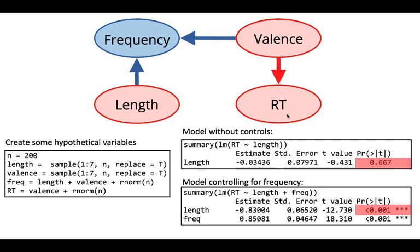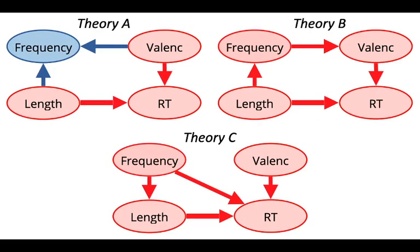Of course this depends on getting the picture of the world right. Some models of this domain have colliders where you shouldn't control for frequency; others don't have colliders where you should. The point is that your hypotheses affect the design of your statistical model. The way you think the world works affects which variables you should control for. Throwing all your variables into a model might actually make your ability to infer what's happening worse than before — you might be introducing confounds.